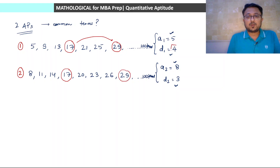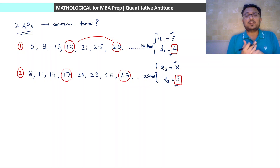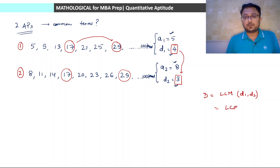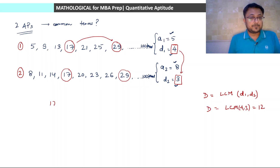Observe the common difference in these two cases. First case mein common difference hai 4, second case mein common difference hai 3. So whatever our common terms will be, they will also form an arithmetic progression. And that particular arithmetic progression's common difference will be the LCM of these two common differences. So for that particular AP, LCM common difference capital D will be equal to LCM of D1 and D2 - LCM of 4 and 3, which equals 12. So the common terms form the sequence: 17, 29, 41, 53, 65 and so on.